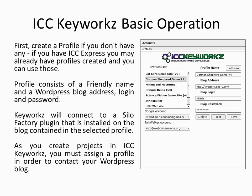Your profile consists of a friendly name to identify it, a WordPress blog address, and the login and password to that WordPress blog. Keyworks will connect directly to a Silo Factory plugin installed on the blog contained in the selected profile. As you create your projects in ICC Keyworks, you must assign a profile to the project in order to contact your WordPress blog.